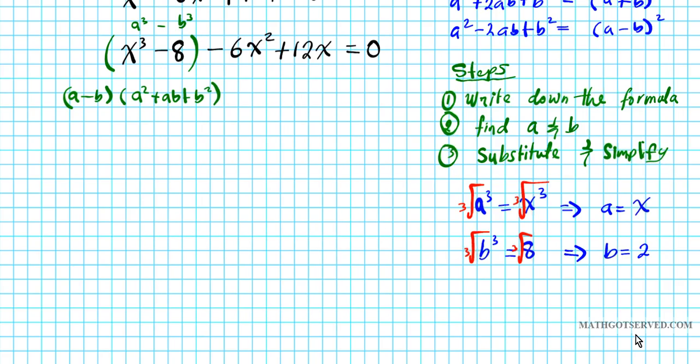So now we have A and B. We're going to advance to step 3 which is substitute and simplify. So A is x minus B which is 2, times A² which is x² plus AB which is 2x plus B² which is 2² = 4. So that's the factorization of this difference of cubes.